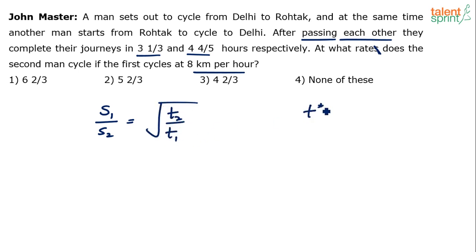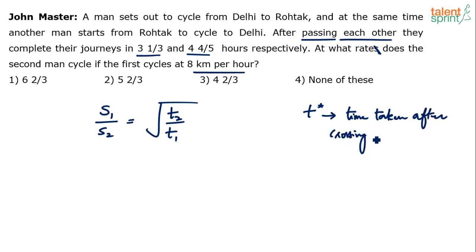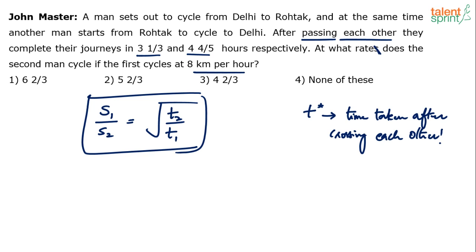Remember, T here refers to the time taken after crossing each other — you have to be careful about that. It's a standard formula for a standard question; substitute the values and get the answer. You cannot afford to go wrong here.